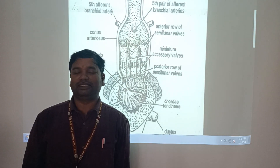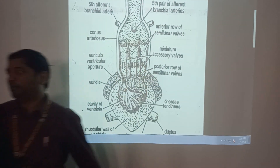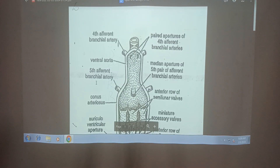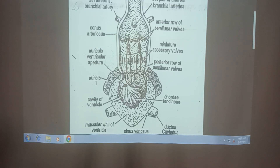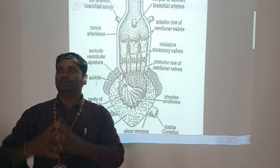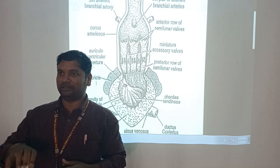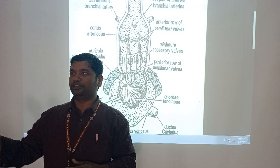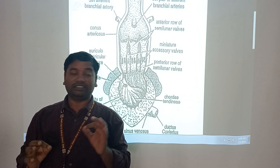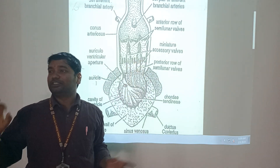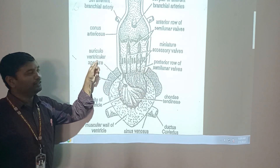Hi everyone, my name is K. Ramachari, lecturer in geology. Today's topic is the circulatory system of Scoliodon. This is an important topic. Different types of body parts are also present in an organism - digestive system, nervous system, and other systems - but the circulatory system plays a very important role in Scoliodon, whose common name is Indian dogfish.